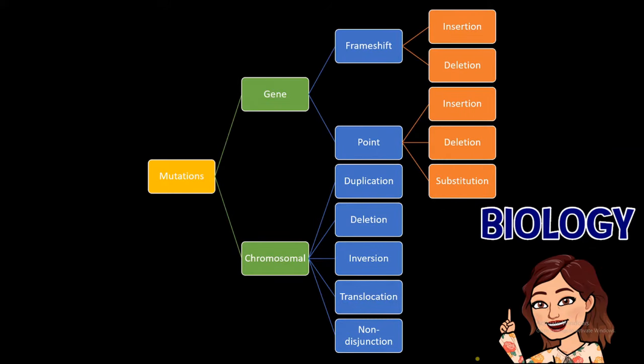We have a lot of mutations, actually. They fall under two umbrellas. The first one is our gene and our chromosomal mutations. In this video, we'll be talking about gene mutations. So, let's delve in.